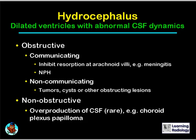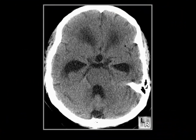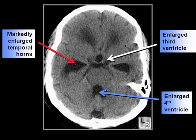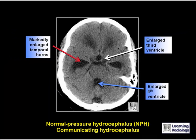The patient has markedly enlarged temporal horns (red arrow), an enlarged third ventricle, and an enlarged fourth ventricle, but the sulci are not enlarged. Given the patient's symptoms of staggering gait and incontinence, this is characteristic of normal pressure hydrocephalus, a form of communicating hydrocephalus.